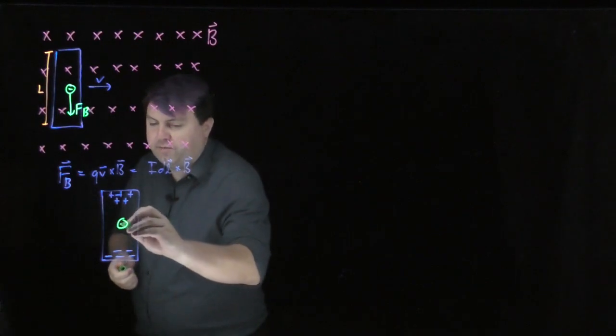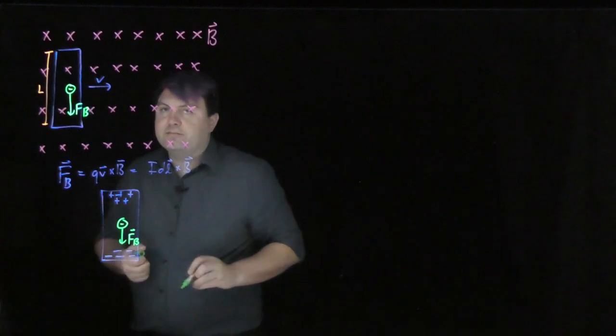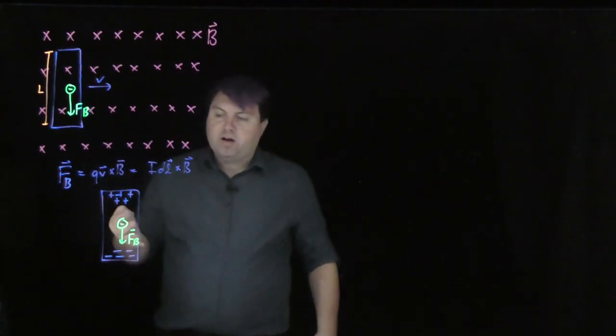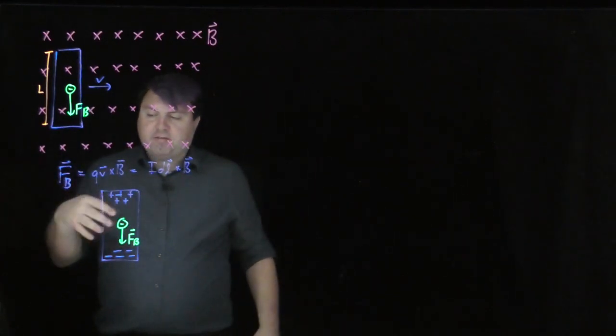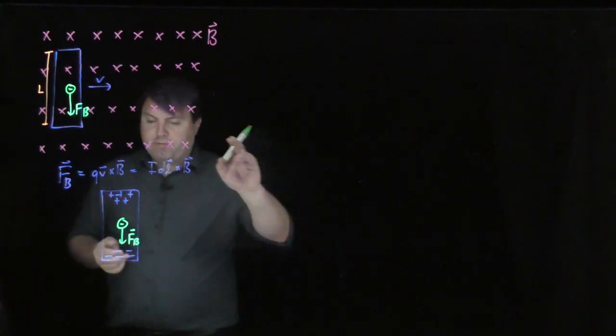So we're going to have a net positive region and that negative region. And our electron is still feeling that magnetic force down. But in a conductor, because the electrons are so small and the force is so large in comparison to their mass, they're eventually going to have to reach equilibrium. Otherwise, they're going to go everywhere that they want to.